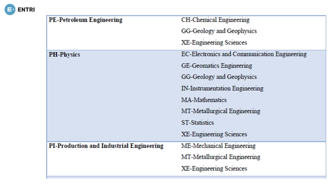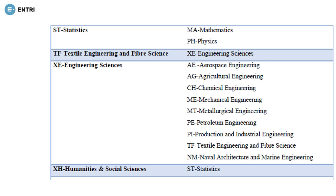If you are from Production and Industrial Engineering, you can choose secondary papers: Mechanical Engineering, Metallurgical Engineering, and Engineering Sciences. For Statistics as your primary paper, you can have two options: Mathematics and Physics. If you are from Textile Engineering and Fiber Science, you can only have one choice: Engineering Sciences as your secondary option. Engineering Sciences has the maximum number of secondary paper options: Aerospace Engineering, Agriculture Engineering, Chemical Engineering, Mechanical Engineering, Metallurgical Engineering, Petroleum Engineering, Production and Industrial Engineering, Textile Engineering and Fiber Science, and Naval Architecture and Marine Engineering.